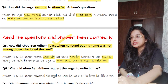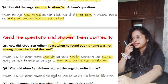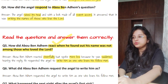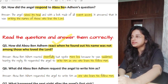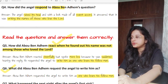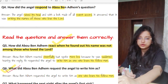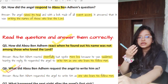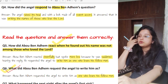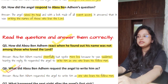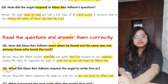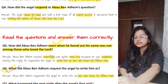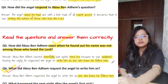What did Abu Ben Adham request the angel to write him as? He requested the angel to write him as one who loves his fellow men. This is a very important question — mark it in red because it is definitely going to come in the exam. Related important questions include: what is the theme of the poem, who is Abu Ben Adham, what did he request the angel to do, and what did the angel show him the next night.